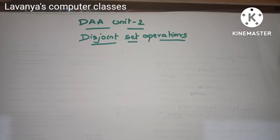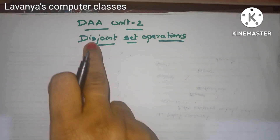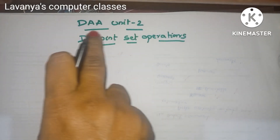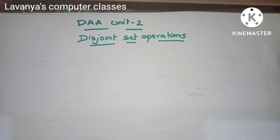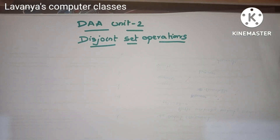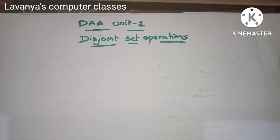Welcome to Lavanya's Computer Classes. In this video, we will explain DA subject Unit 2 — Design and Analysis of Algorithms Unit 2. The topic of Unit 2 is Disjoint Set Operations.